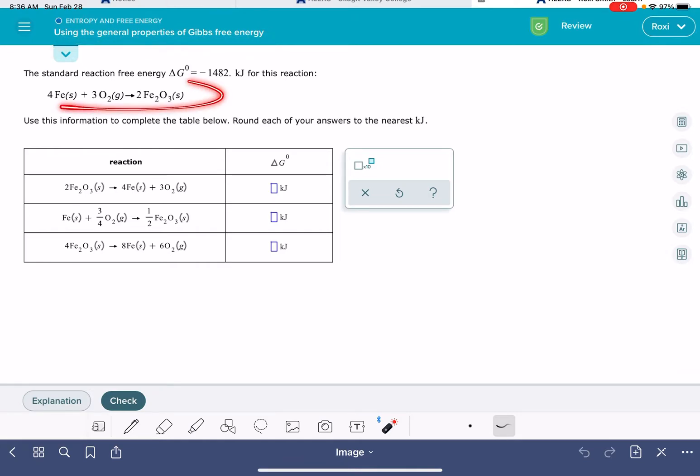In this problem, you're going to be given a chemical reaction and the delta G value for that reaction. Then you're going to have three equations down here, three reactions that are derived from this provided equation.